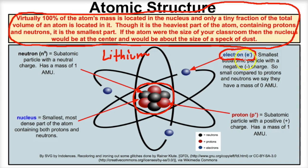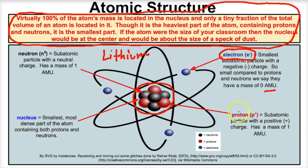Electrons are the smallest subatomic particle with a negative charge. They are so small compared to protons and neutrons that we say they have a mass of zero AMUs — atomic mass units. Outside of the nucleus, we have negative particles called electrons. Inside the nucleus, we have protons, which are positively charged subatomic particles that have a mass of one AMU.